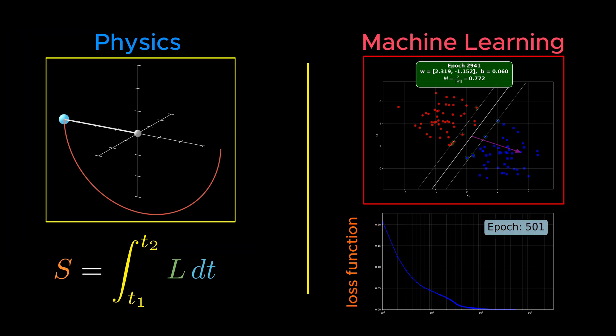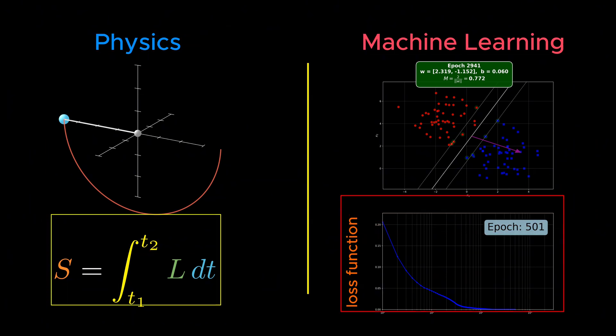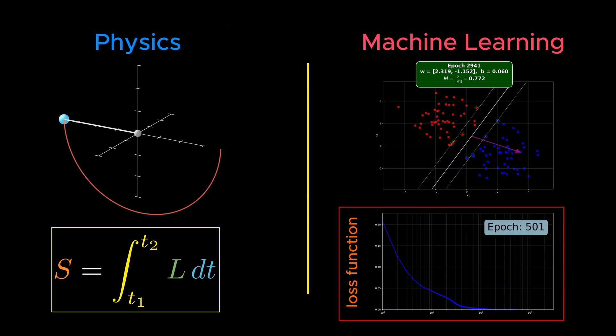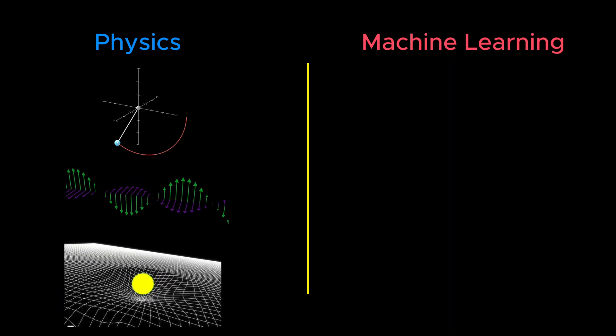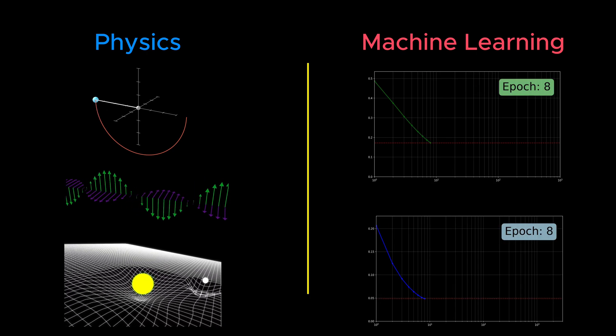We can say that the action in physics is dual to the loss function in machine learning. Both describe a system's behavior by defining a kind of cost, and in both cases, the actual behavior of the system is the one that minimizes that cost. However, at least at this time, there is a crucial difference between how nature optimizes its system in physics and how we humans optimize our machine learning models.